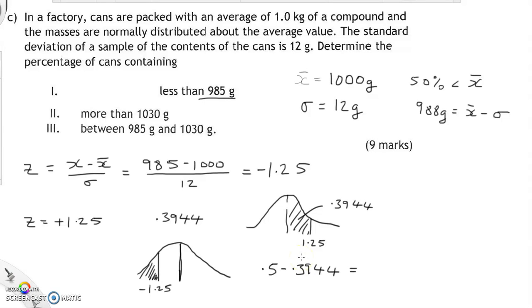Put that in the calculator, 0.5 minus 0.3944, and we get 0.1056. That represents this area here, less than negative 1.25 standard deviations. That's an area, and that area can be converted into a probability or into a percentage by multiplying by 100. 0.1056 multiplied by 100, we move the decimal place two points to the right, and we get 10.56%. So we're expecting in this setup here, 10.56% of the cans will be less than 985 grams.